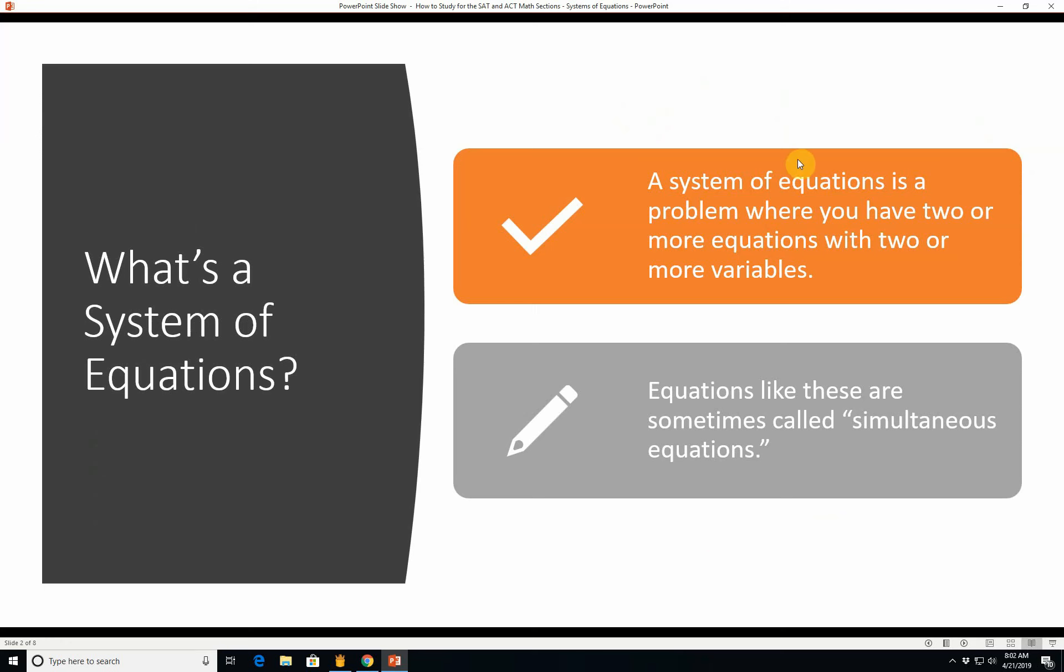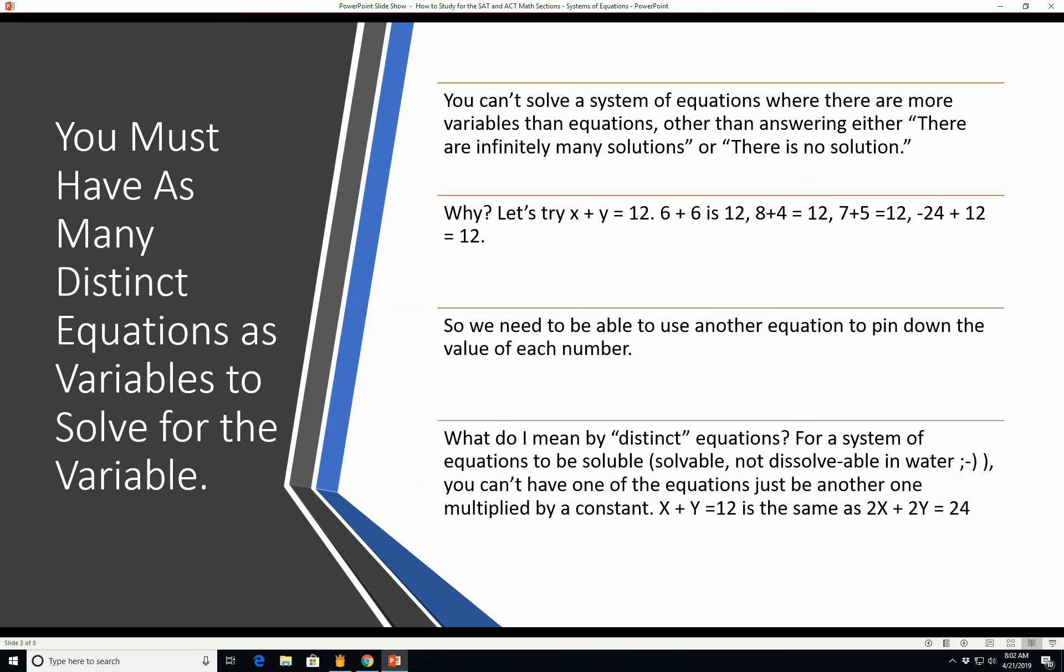What's a system of equations in the first place? Well a system of equations is a problem where you have two or more equations with two or more variables. Equations like these are sometimes called simultaneous. You must have as many distinct equations as variables to solve for the variables. You can't solve a system of equations when there are more variables than equations other than answering either there are infinitely many solutions or there is no solution.